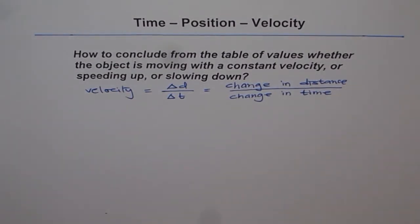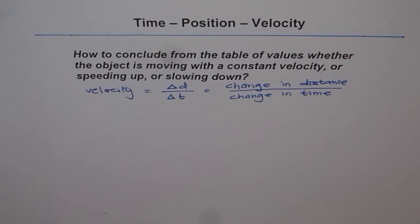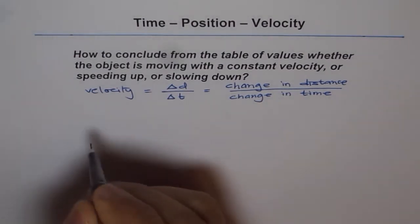Now, if the change in distance for a fixed change in time is constant, then the velocity is constant. If the change in distance is increasing for a fixed change in time, then the velocity is increasing — therefore, we say the object is speeding up. And if the change in distance is lesser and lesser in each successive similar change in time, then the velocity is decreasing and we say the object is slowing down.